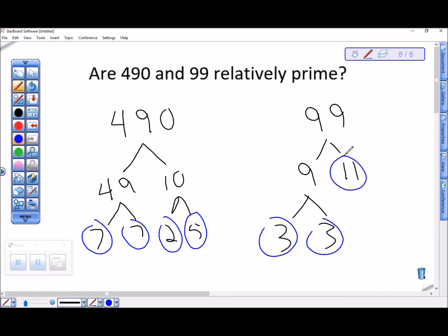I have for prime factorizations, 490 is 2 times 5 times 7 squared, and 99 is 3 squared times 11.